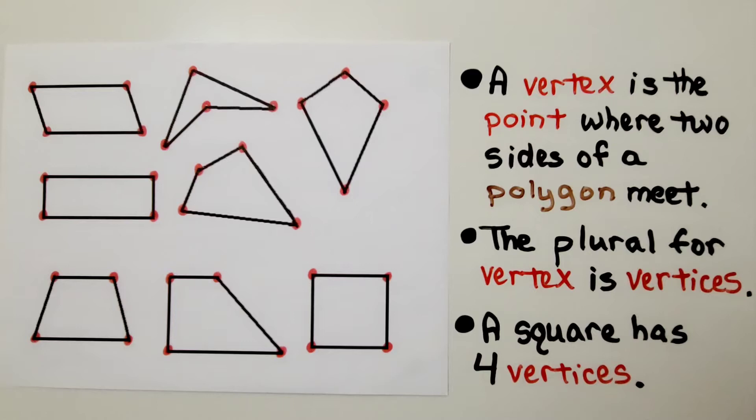A vertex is a point where two sides of a polygon meet. The plural for vertex is vertices. A square has four vertices.